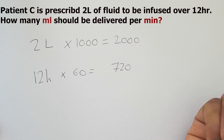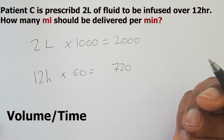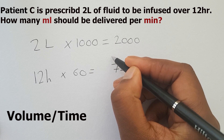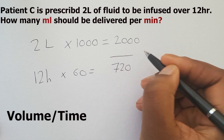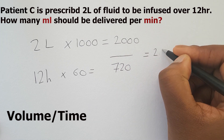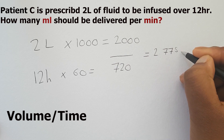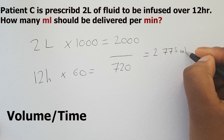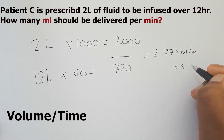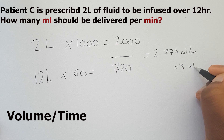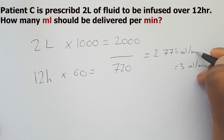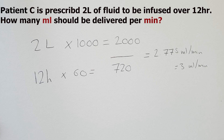Flow rate is simply volume divided by time, so we do 2,000 divided by 720, which gives us 2.775 mils per minute — essentially 3 mils per minute if you round up.